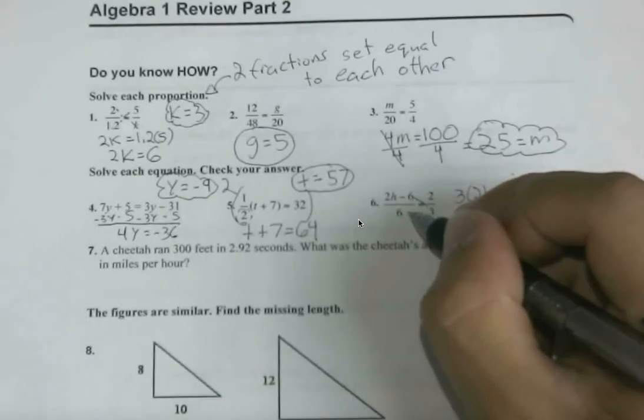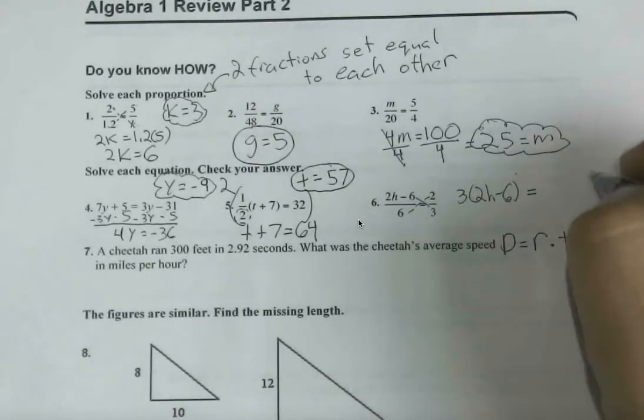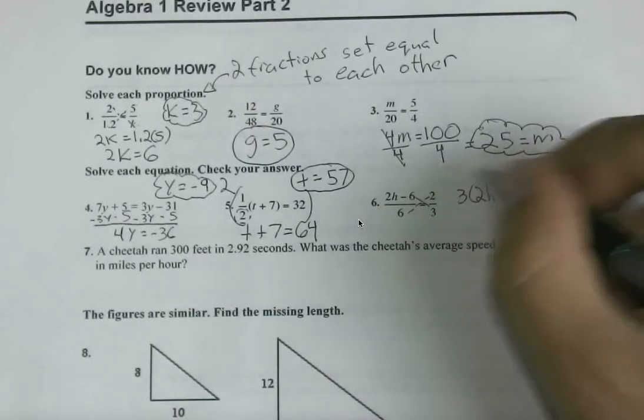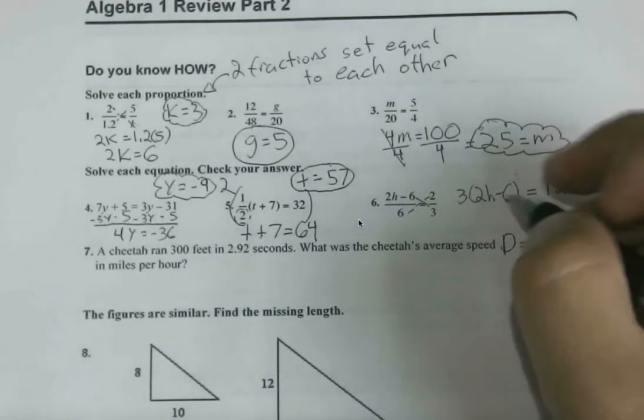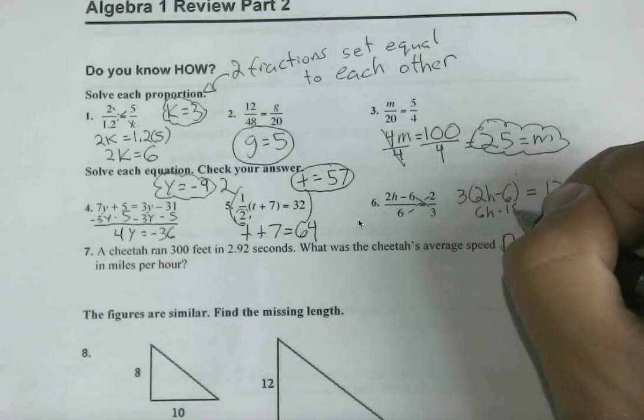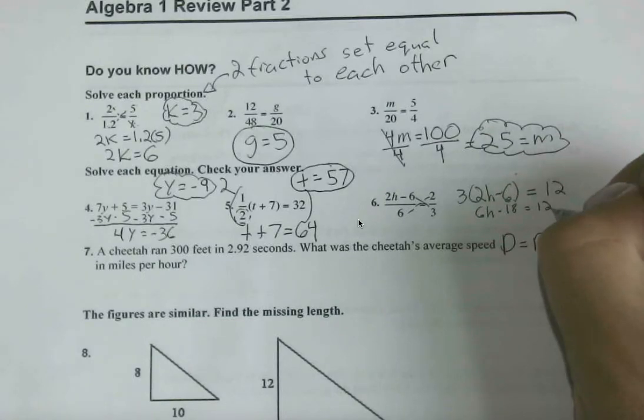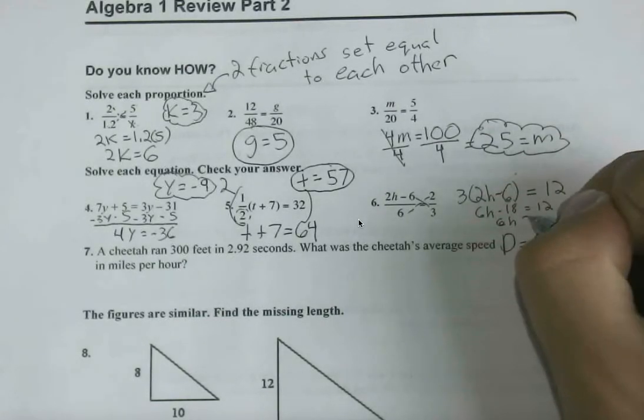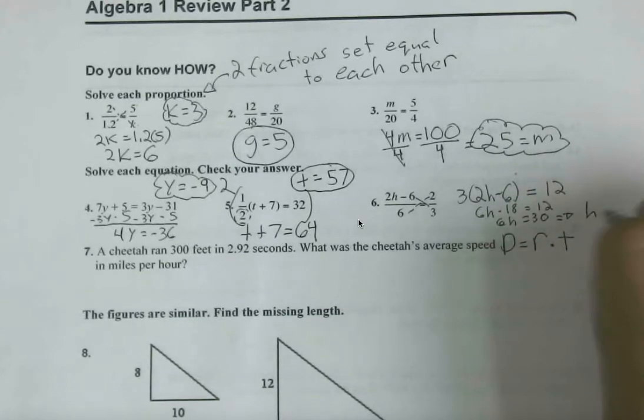It should be saying the product of 6 and 2, so 12. If you want to distribute, you can. Let's call this 6h minus 18 equals 12. Eventually, you have 6h equals 30, so h is going to have to be equal to 5.